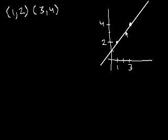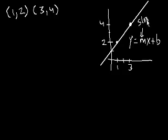So what we want to do is figure out the equation of this line. Well, we know that the form of an equation of a line is y equals mx plus b, where m is the slope, and that tells you how steep the line is, and b is the y-intercept. And the y-intercept is just where does it intersect the y-axis.